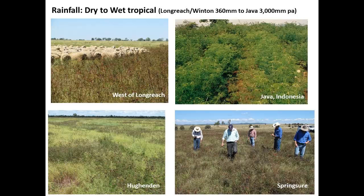Some species thrive in dry environments and others thrive in very wet tropical regions. The image on the top left is out west of Longreach, about a 360 millimetre rainfall area, where we have some plots doing well. The bottom left is a plot growing out near Huwenden at about 480 millimetres, growing with Flinders grass. The bottom right is out at Springshore — a Desmanthus buffel paddock in about 690 millimetres — and the top right is in Indonesia in West Java, a wet tropics environment with about 3,000 millimetres of rainfall.